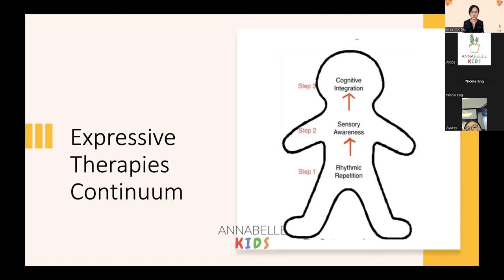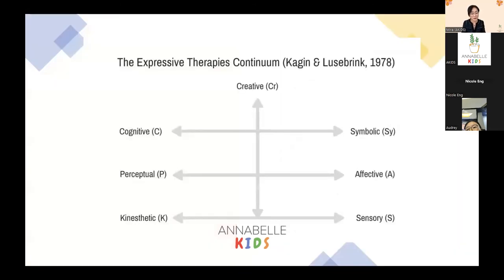How will children gradually move to a sensory awareness stage before they move on to a more cognitive and deliberate use of imagination in their art making? The Expressive Therapies Continuum is a framework to interpret a creative process that consists of three domains. At the bottom, the kinesthetic and sensory; next, the perceptual and affective; followed by the cognitive and symbolic areas; and at the top, the creative level. These domains may not be very discrete — they often overlap with each other and are not necessarily linear.